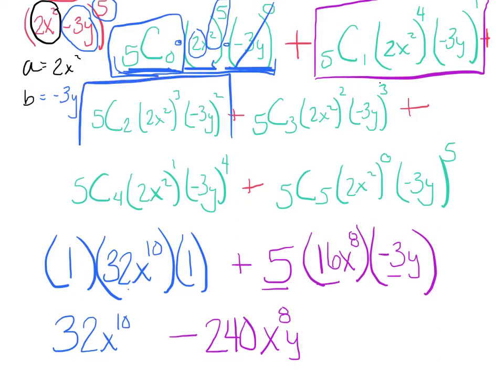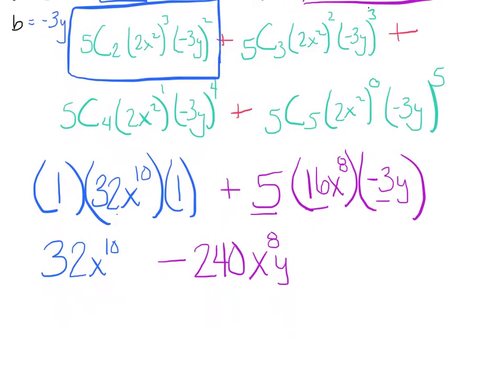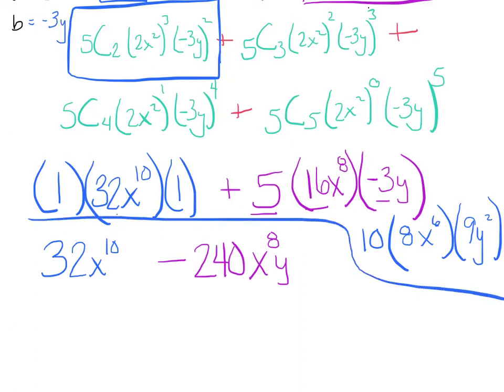Alright, get the next term. I'm going to box it in. 5 choose 2 gets me a 10. And I'm just going to kind of write this off to this side here. I've got a 10. 2x squared cubed. 2 cubed is 8. x to the 6th. Negative 3 squared is a positive 9y squared. Again, carefully multiply those. And I'm going to get positive 720x to the 6th, y squared.